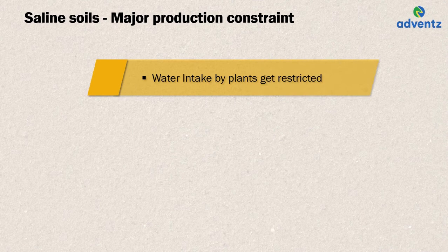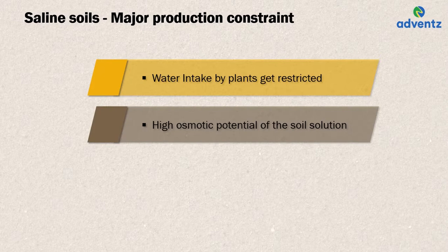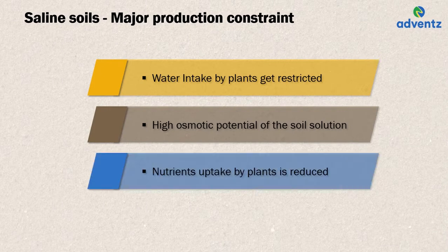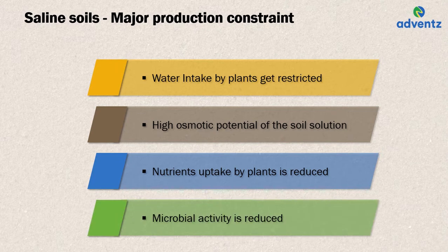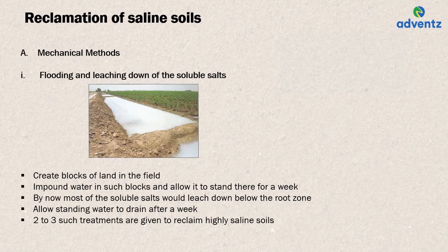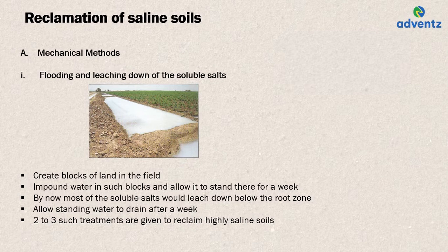The major production constraints in saline soils: the high amount of salt makes it difficult for plants to absorb moisture from the soil due to osmotic potential, reducing nutrient uptake. Microbial activity is also reduced due to high salt levels. The idea behind reclamation of saline soils is the removal of excess salts through leaching with water and drainage.